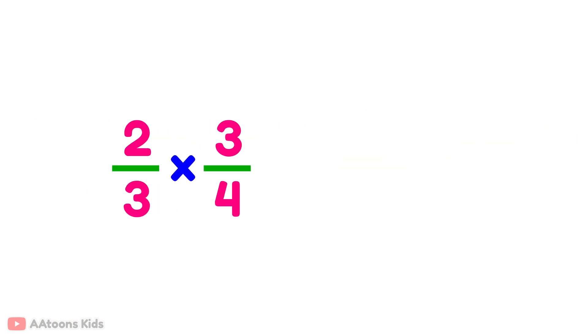Multiply the fractions: 2 over 3 multiplied by 3 over 4. First step, multiply the numerators: 2 multiplied by 3 equals 6.